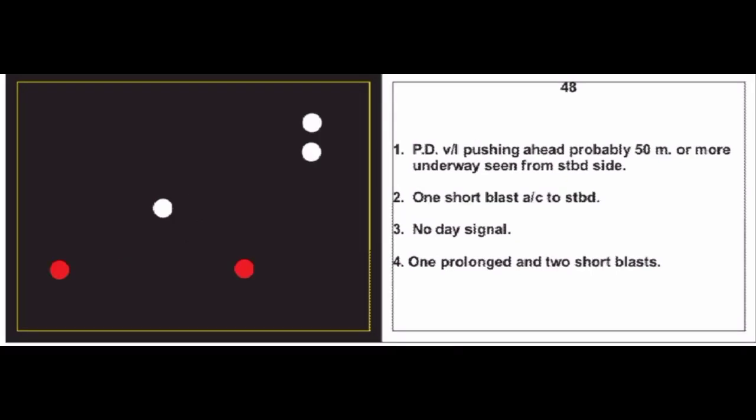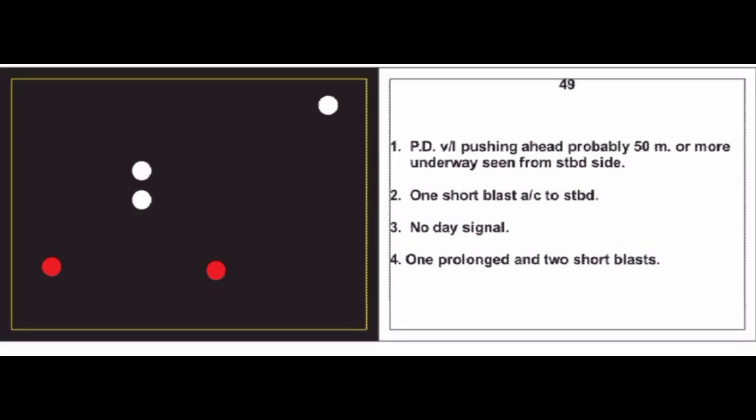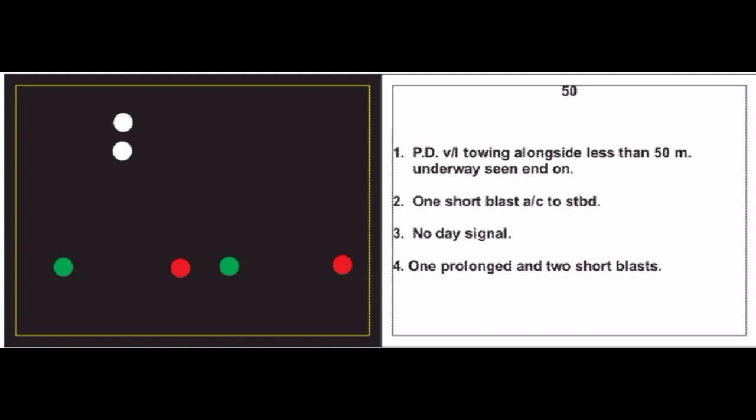Card 48: Power driven vessel pushing ahead, probably 50 meters or more, underway, seen from starboard side. One short blast, alter course to starboard. No day signal — less than 200 meters. Sound signal: one prolonged and two short blasts. Card 49: Power driven vessel pushing ahead, probably 50 meters or more, underway, seen from starboard side. One short blast, alter course to starboard. No day signal. One prolonged and two short blasts.